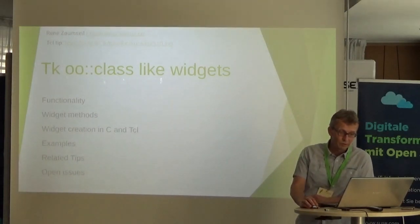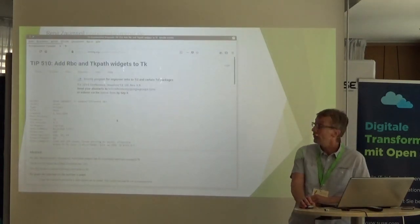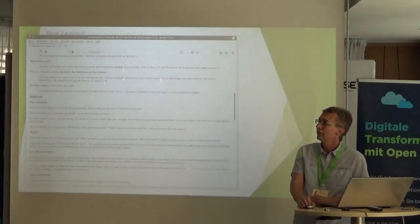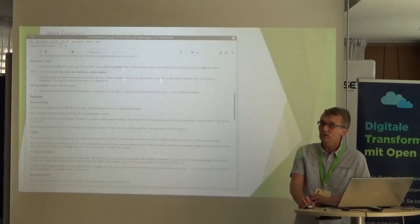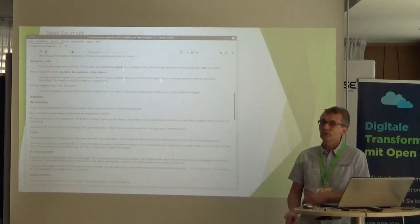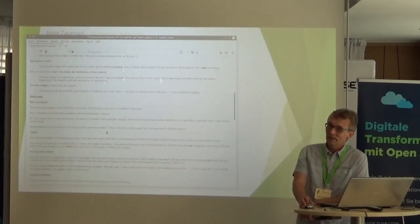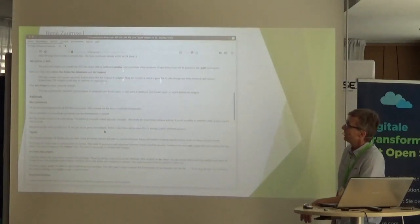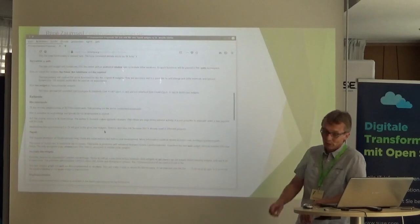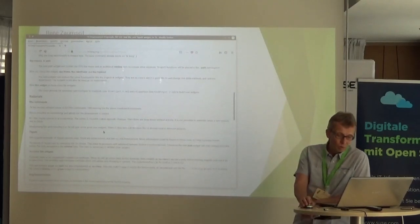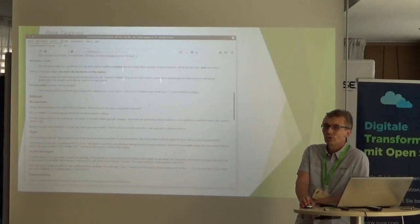On the TIP page you can find the description of what has been done. It started as an implementation of the RBC graph widgets and the TK path widget. When integrating these widgets into TK, the option handling was problematic and very difficult to replace, so the decision was made to create a more common, easier approach to add and handle widget options inside widgets.